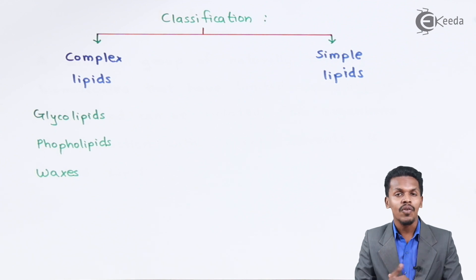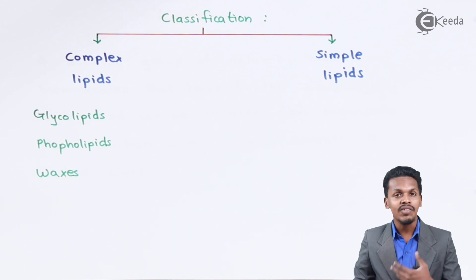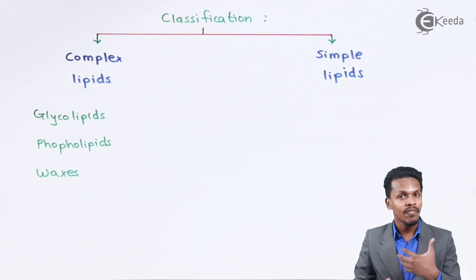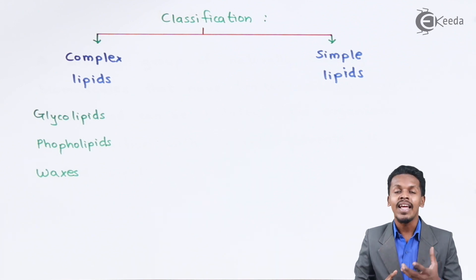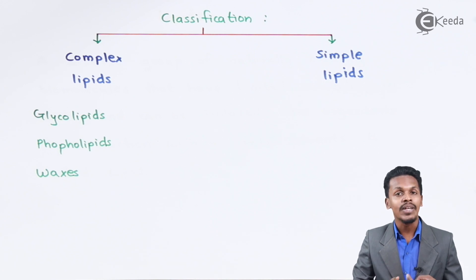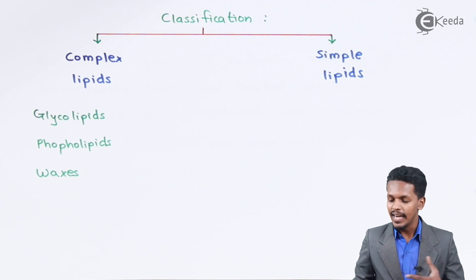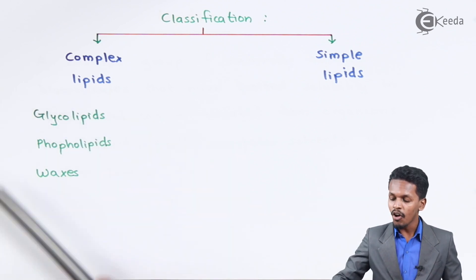Regarding phospholipids: lipids are esters of long-chain fatty acids. Glycerol consists of three hydroxyl (OH) groups. If all three OH groups are esterified, we get triacylglycerol (TAG). However, if only two hydroxyl groups are esterified and the remaining OH group is phosphorylated, the product is called a phospholipid.